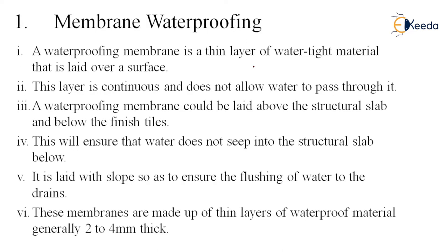Membrane waterproofing. Membrane waterproofing is a thin layer of watertight material that is laid over a surface. This waterproofing system makes use of a membrane which does not allow water to seep into the below surface. This layer is continuous and does not allow water to pass. A waterproofing membrane could be laid above the structural slab and below the finished tile.